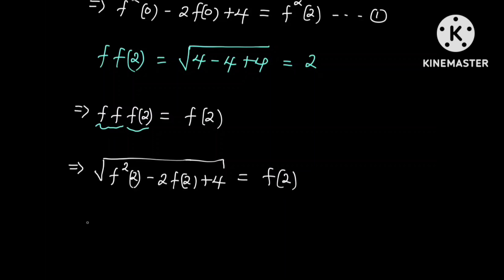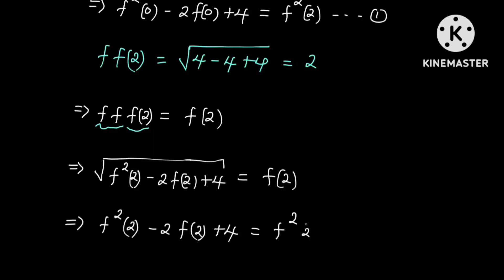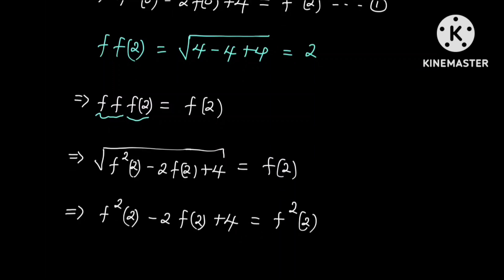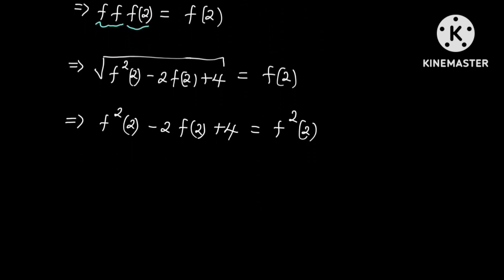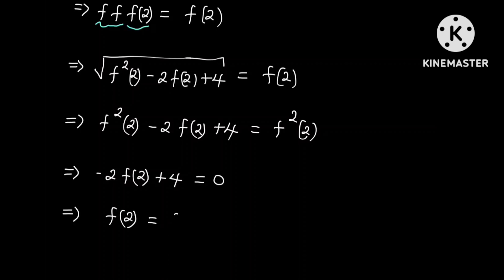If we square both sides, we obtain f squared of 2 minus 2 times f of 2 plus 4 is equal to f squared of 2. If we subtract f squared of 2 from both sides, we obtain negative 2 times f of 2 plus 4 is equal to 0. This implies that f of 2 is equal to 2.